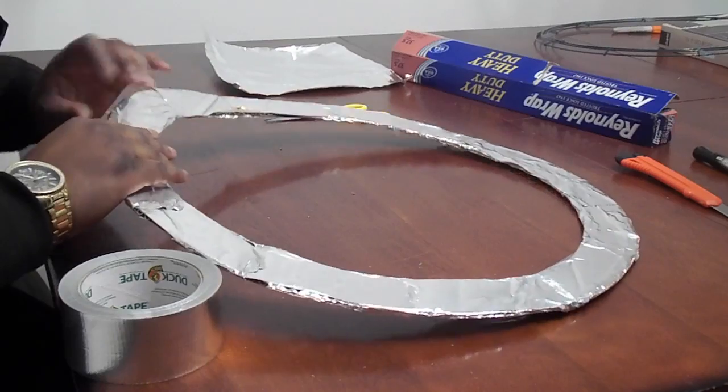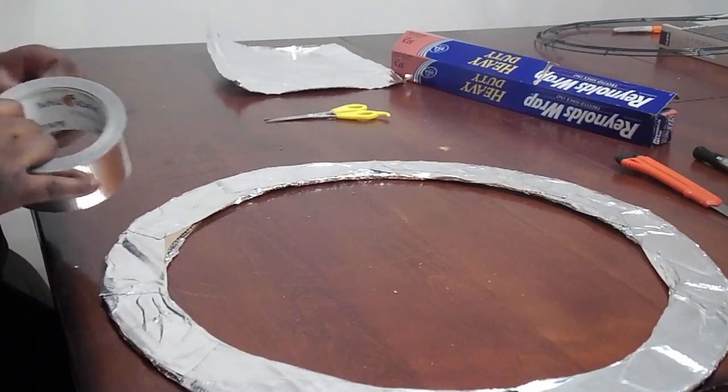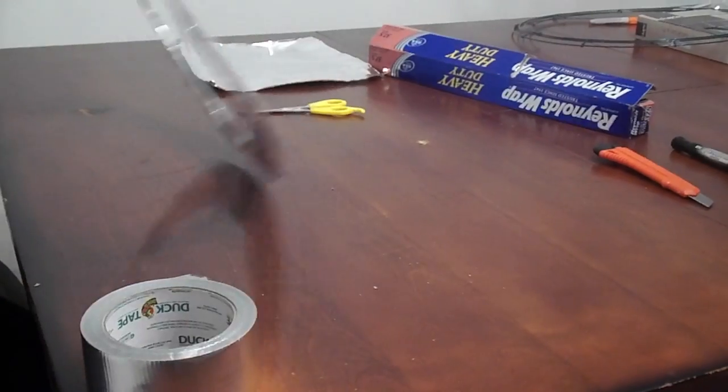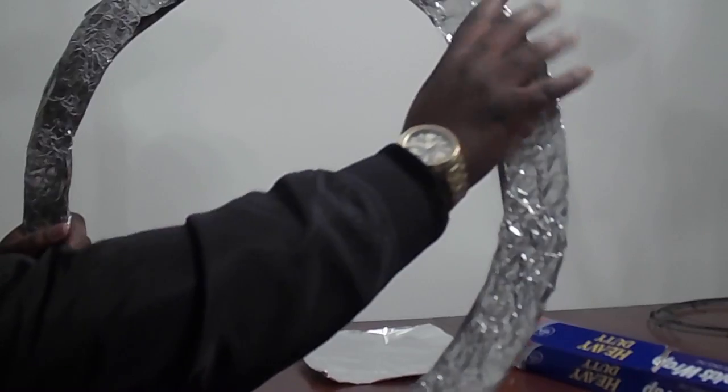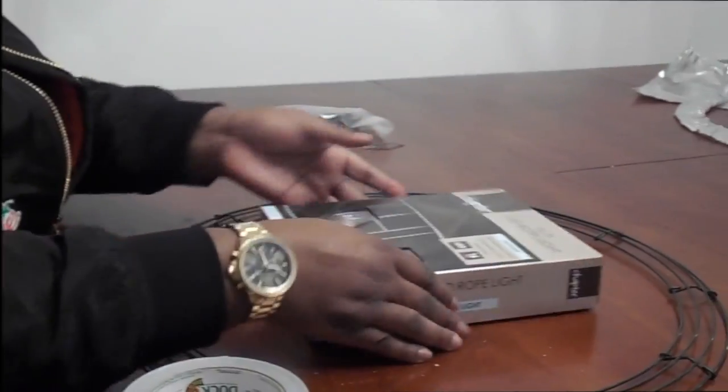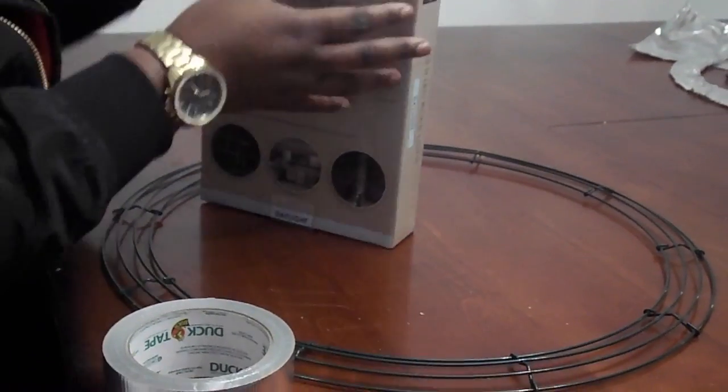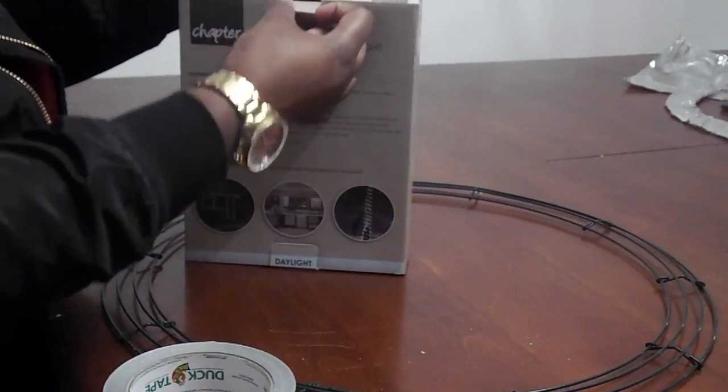And keep in mind you guys, this does not have to be perfect. As you can tell, I missed a few pieces there, so I'm just going back and redoing it. But like I said, it doesn't have to be perfect. It's serving as a backdrop for your ring light, and the aluminum is for the light to reflect onto you. The aluminum helps out with that.